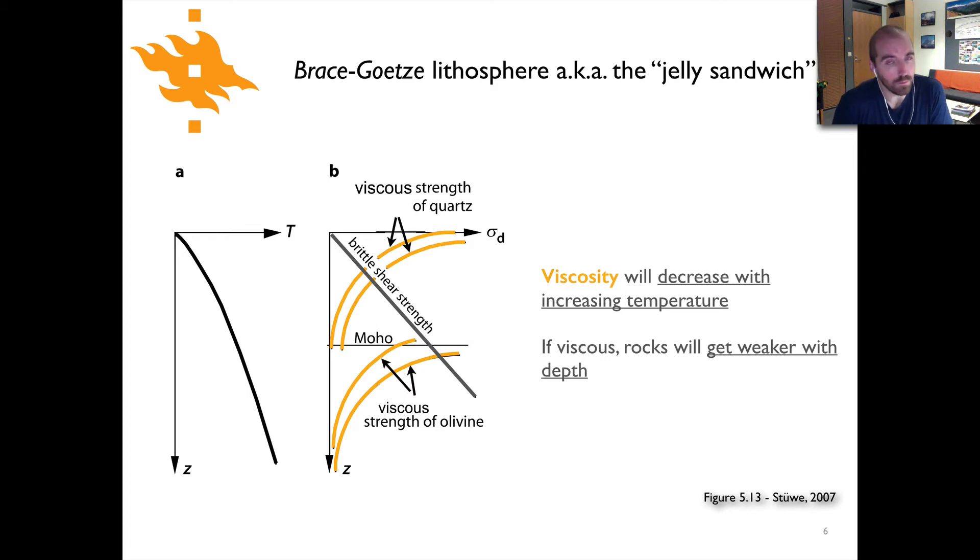Now we also know from the last few video lectures in this set that the viscosity of rock will decrease with increasing temperature. If the rocks are behaving as a viscous fluid they're going to get weaker and weaker with depth and that's shown here in these curved orange lines. There's two different orange lines that are shown in the top showing the viscous strength of quartz and below that showing the viscous strength of olivine just taking a representative mineral for the crust and one for the mantle.